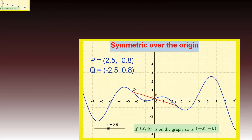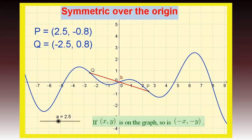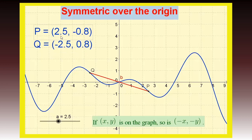Finally, we have symmetry over the origin. The definition of symmetric over the origin is: if you have a point x comma y on a graph, then so is the point negative x comma negative y. Take a look at points P and Q. The coordinate for P right now is 2.5 and negative 0.8, and the coordinates for Q are the opposites — negative 2.5 and positive 0.8.